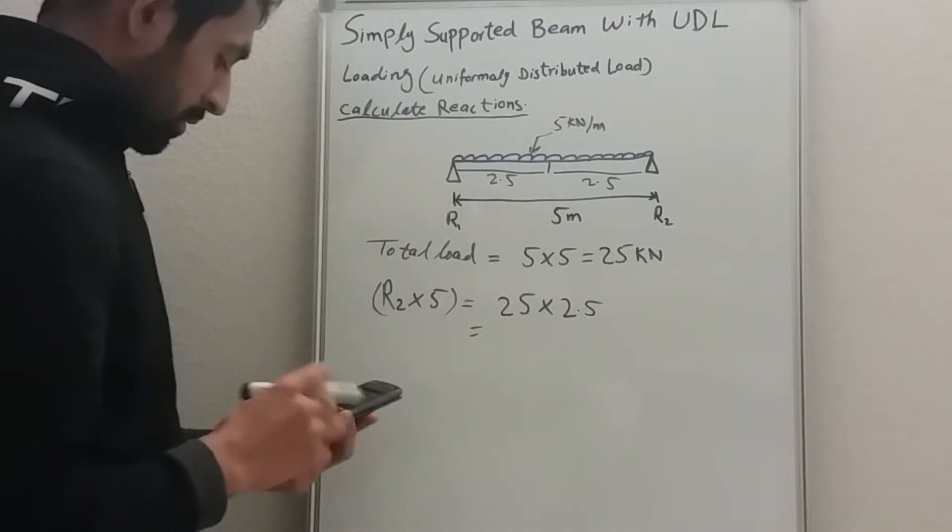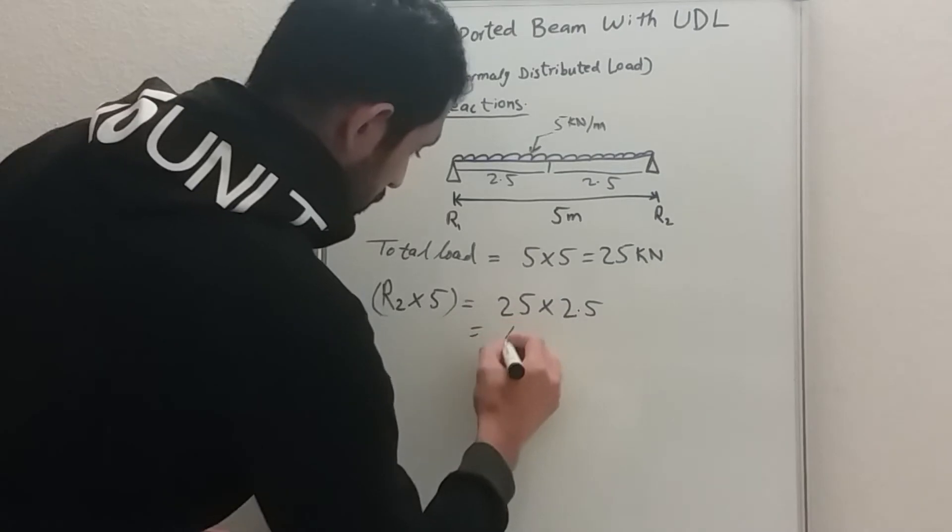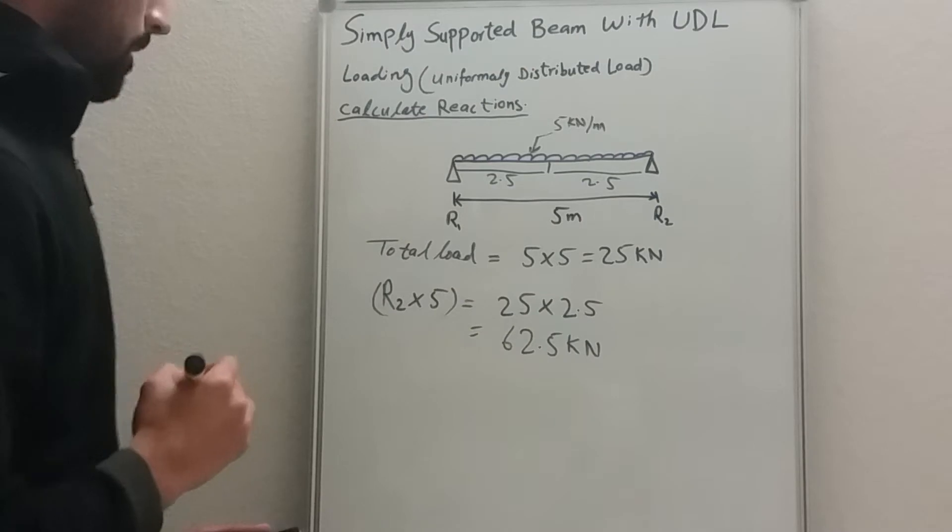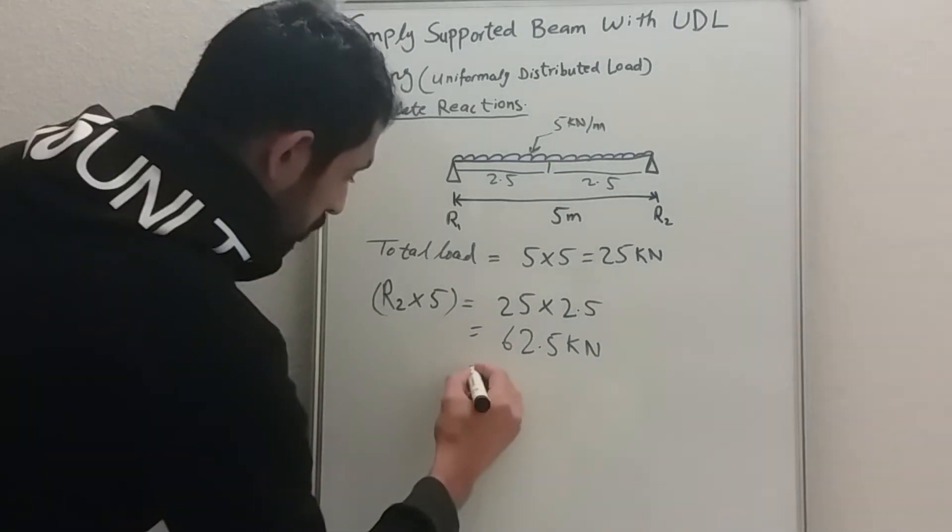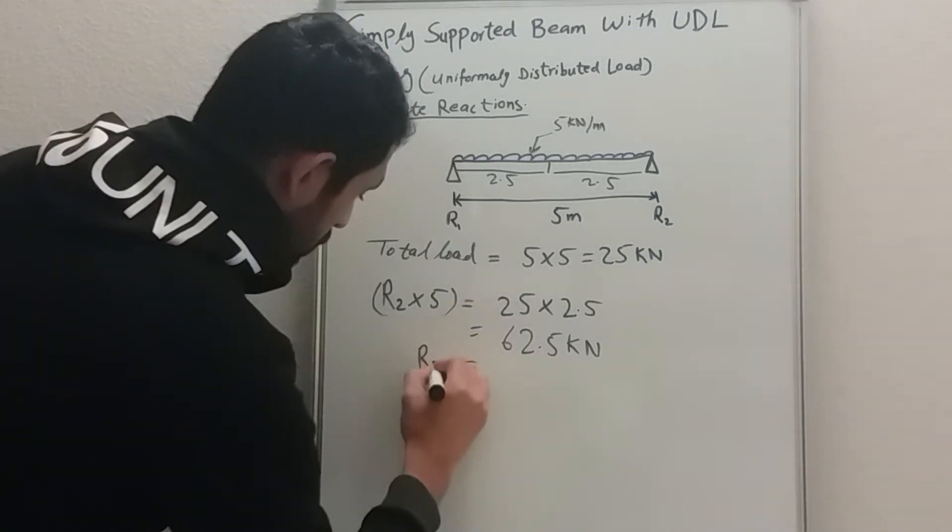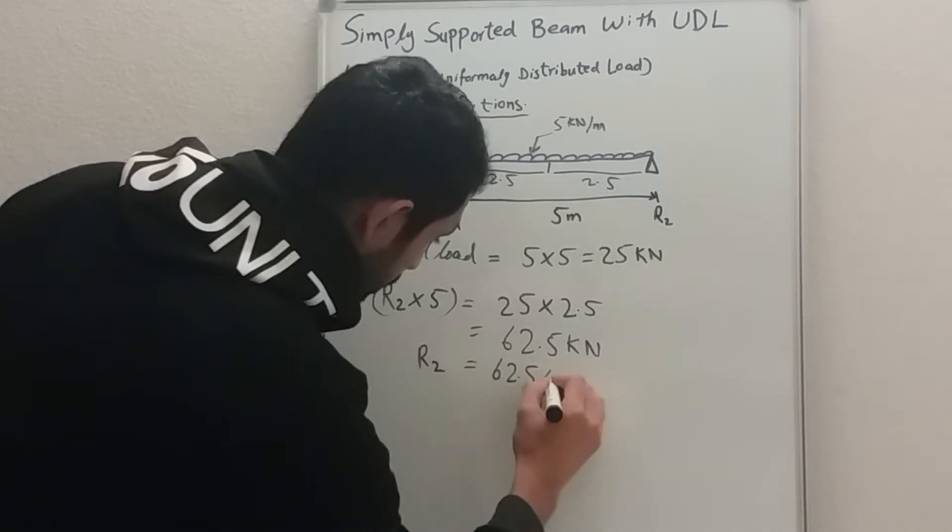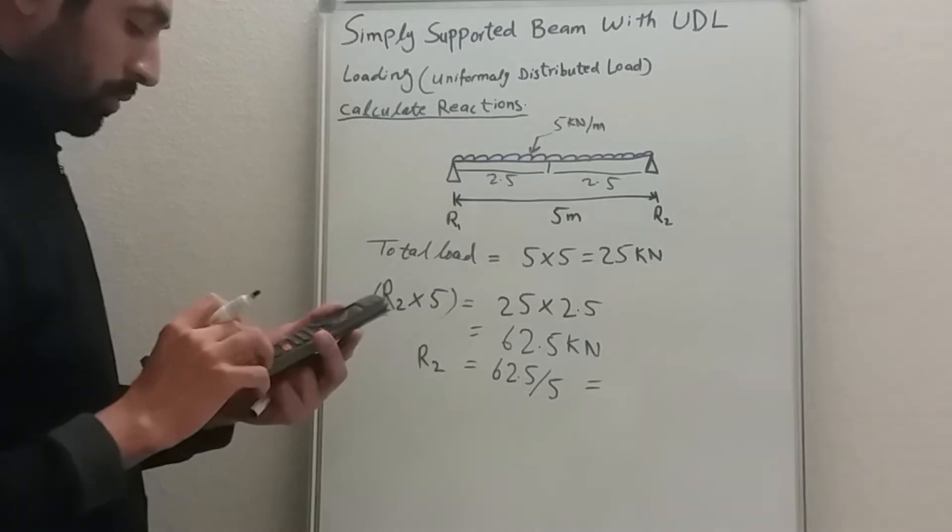So 25 times 2.5 will give you 62.5 kilonewtons. So how to calculate R2? R2 is equal to 62.5 divided by 5 is equal to 12.5 kilonewtons.